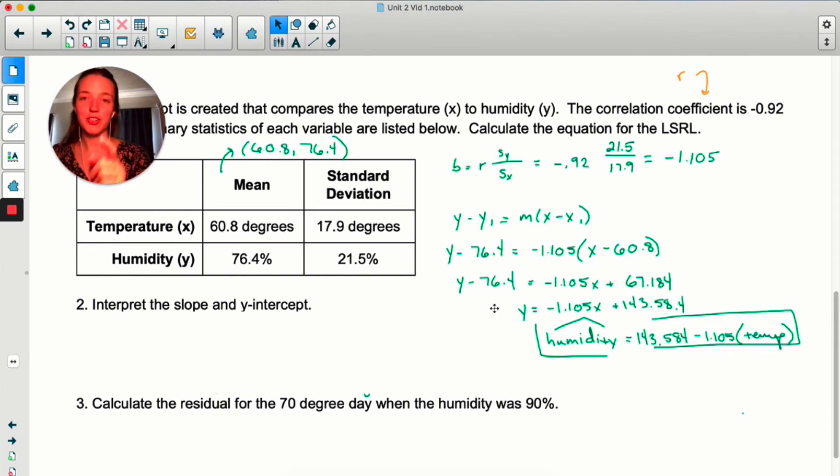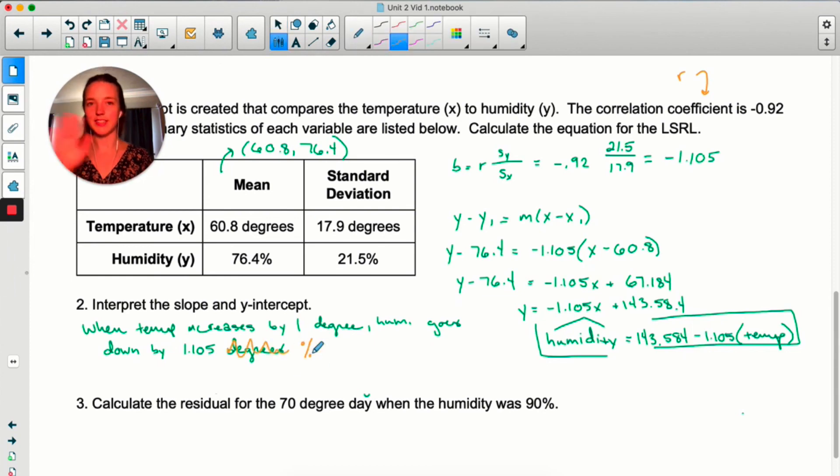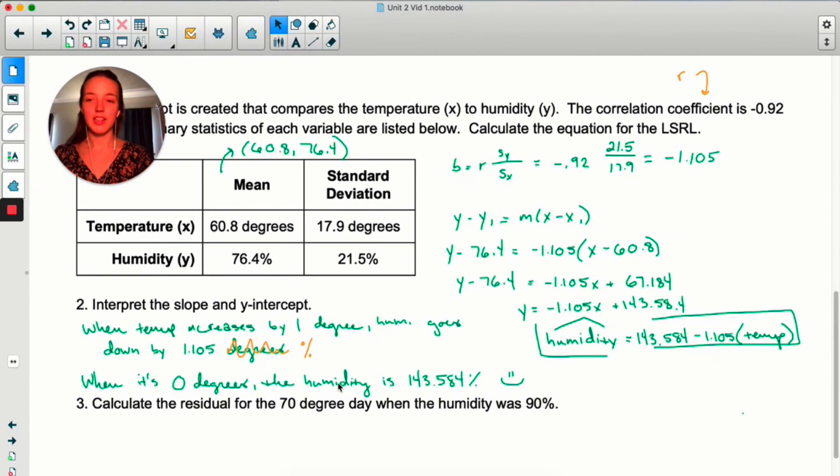Okay, why don't you pause the video and try two and three on your own. So, for slope, when the temperature increases by one, remember that's our x variable, one degree, sorry, context, the humidity goes down by 1.105%. You didn't see anything. So, here's a negative slope. When x is increasing by one, y is decreasing by blank. The y-intercept, once again, makes no sense. When it's zero degrees outside, the humidity is 143.584%. Y-intercepts, I'll tell you.